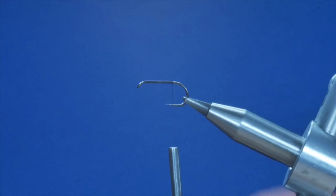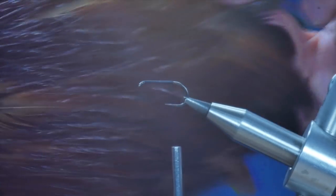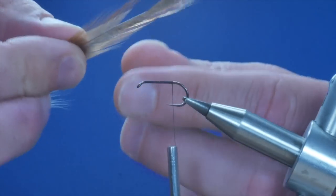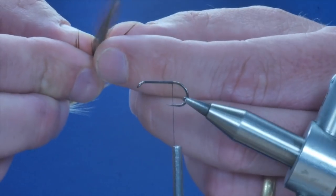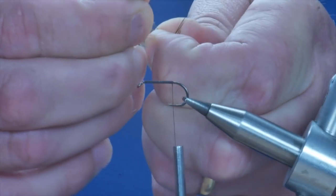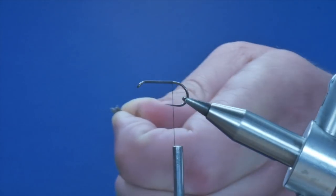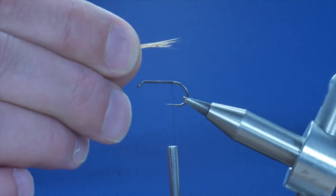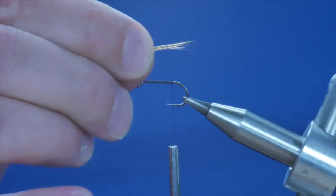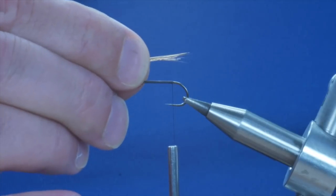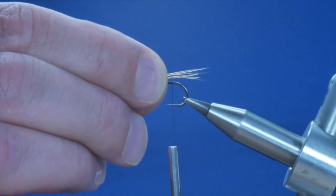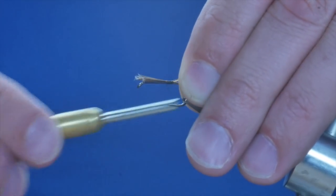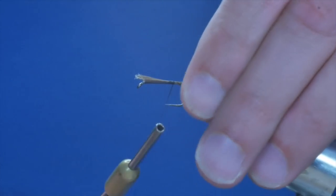Now the tail of this fly I'm going to use just a cheap cock hackle feather. Simply come in near the top because that's where the best color is and take five or six strands, rip them away. Once I've got my fibers I want it to be about two-thirds of the length of the shank of the hook. I'm going to catch it on with my left hand and get a couple of wraps to hold that into place.